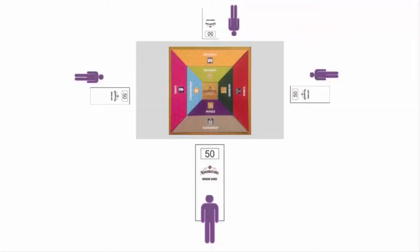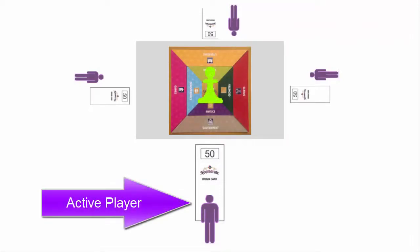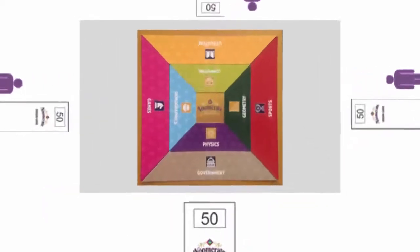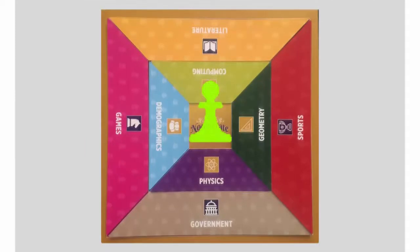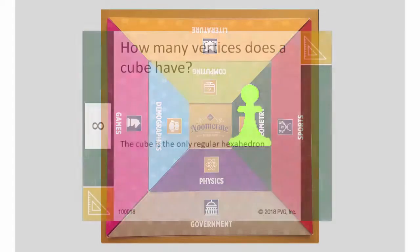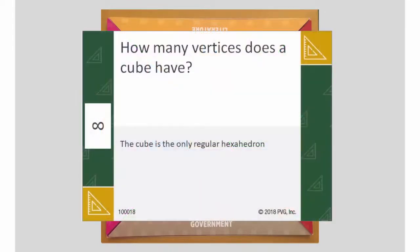Let's take a look at gameplay. Players arrange themselves around the board, and each one places an origin card in front of them. The game piece starts in the center of the board. Choose a player to begin — this is the first active player. In individual play, the question reader is always to the right of the active player. You can be more flexible with the question reader in team play. The first active player moves the game piece to one of the four adjoining tiles. The game piece will never return to the center square. The reader then reads the question from the top card of the selected category — in this case, geometry.